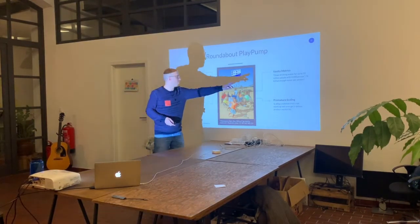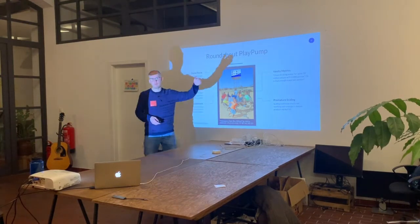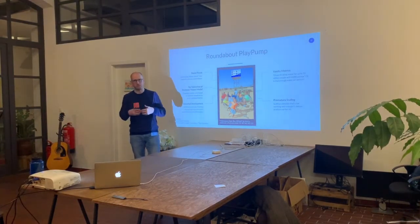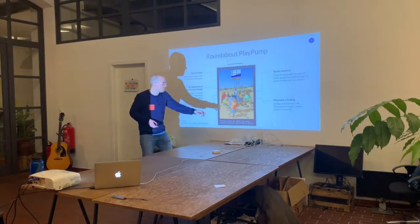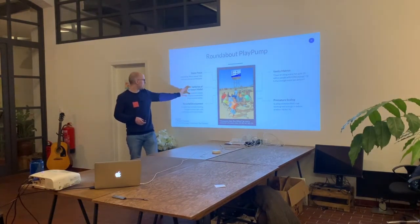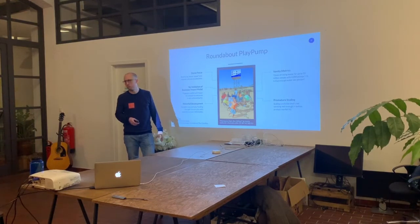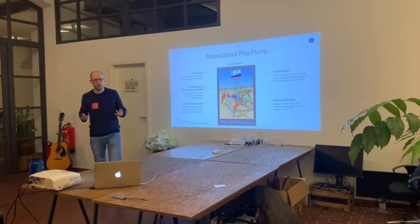They also use vanity metrics — saying 'clean drinking water for up to 10 million people' sounds impressive but 'up to 10 million' could be anything. They don't validate any of this. Premature scaling is basically scaling without proof of concept. A Genome Report study says 70% of all startups die because they scale prematurely — doing a lot of marketing before the product actually works — and I believe in the non-profit sector, if you measured it, it would be even higher.